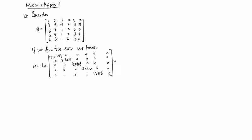And we've got our Vt. So then we can say the total variance. This is 15.0759 squared plus all five of those. If you do this, this equals 286. Note you can also get this by taking the lengths of the columns of A, squaring them, and adding — the sum of the lengths squared.